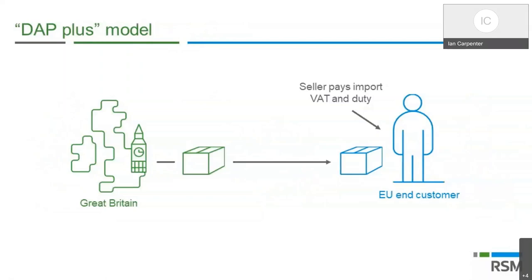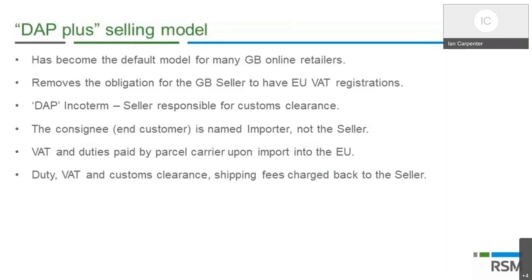The DAP plus model is a commercial approach — DAP means 'Delivered At Place,' an Incoterm for freight movement — under which the EU end customer is regarded as the importer, but the seller pays the import VAT and import duty on their behalf. This model has been adopted by quite a few UK businesses in advance of the July changes. It removes the obligation for the GB seller to have an EU VAT registration, and it is the customer — not the seller — who is named as the importer. VAT and duties are paid by the parcel carrier upon import and then recharged back to the seller.